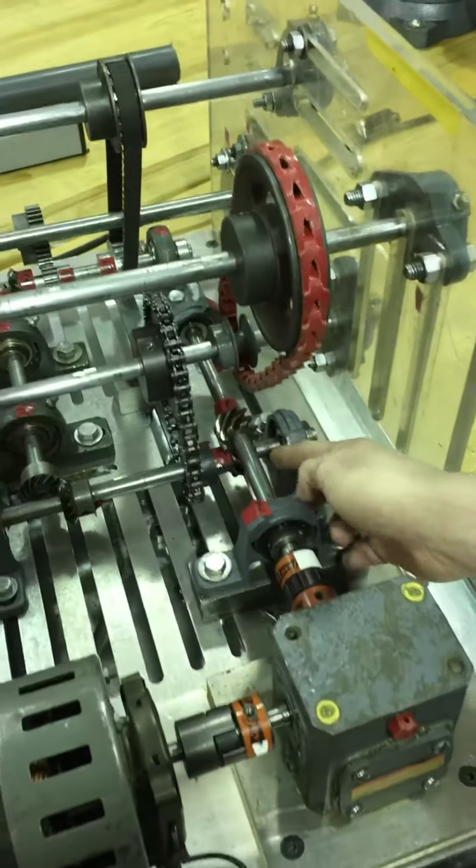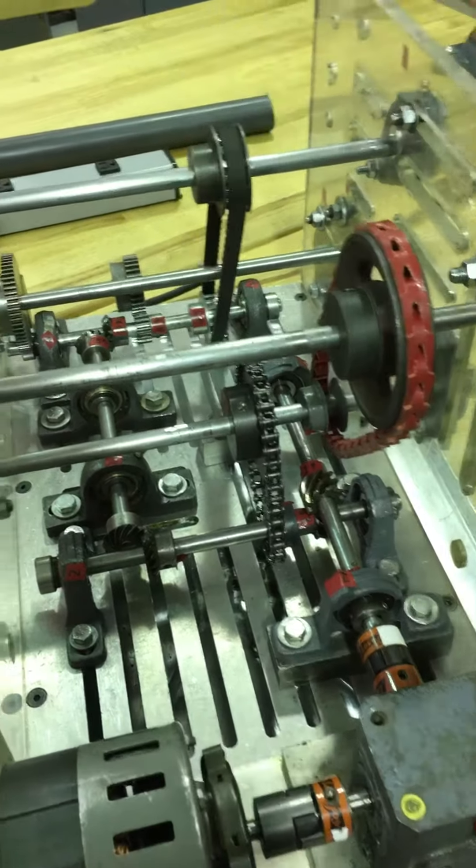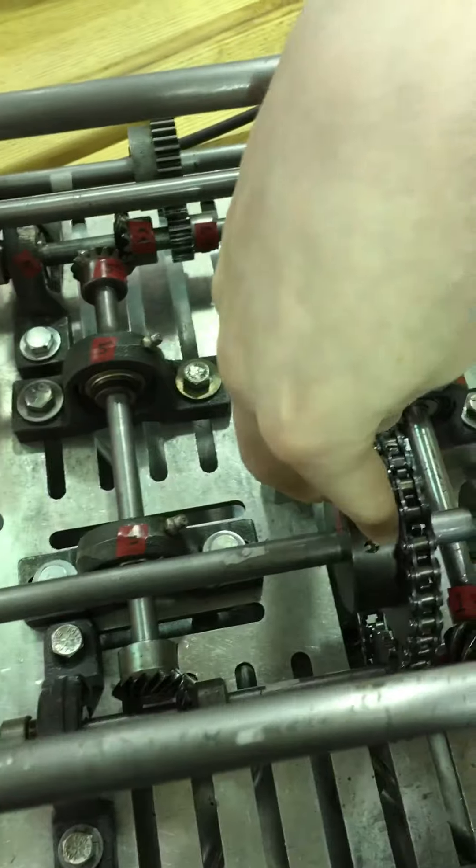Shaft one drives shaft two through a set of helical gears. Shaft two drives shaft three here through a chain and sprocket.